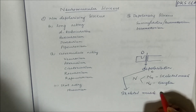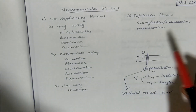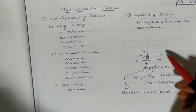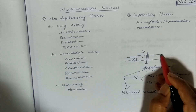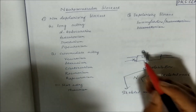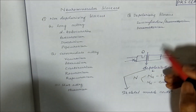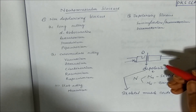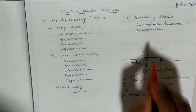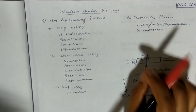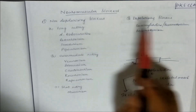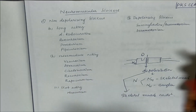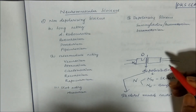When we say nicotinic muscular (NM) receptor blockers, there will be blocking of the actions of acetylcholine, and they act as skeletal muscle relaxants. These blockers can be divided into two groups: non-depolarizing blockers and depolarizing blockers.